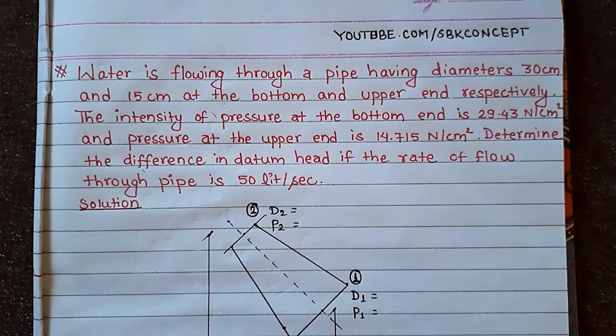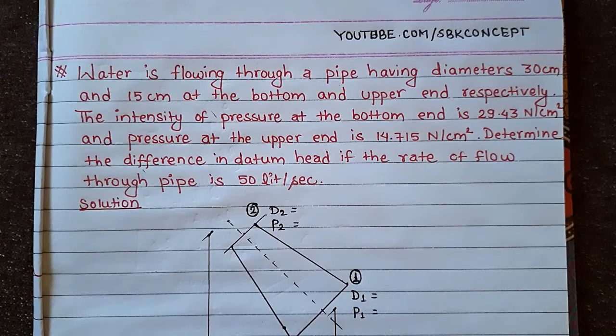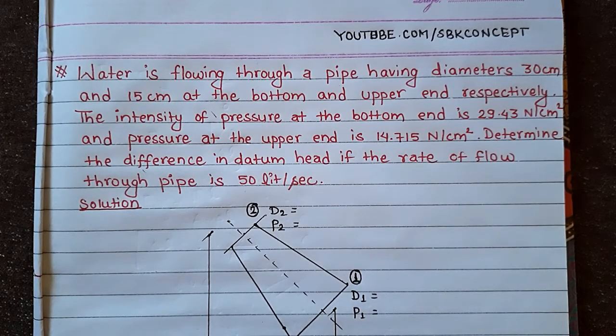Water is flowing through a pipe having diameters 30 cm and 15 cm at the bottom and upper end respectively. The intensity of pressure at the bottom end is 29.43 N/m²